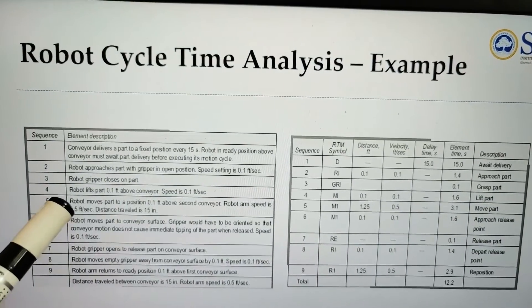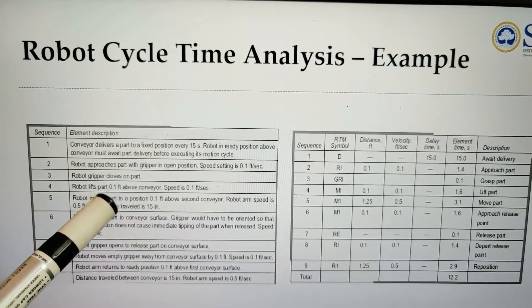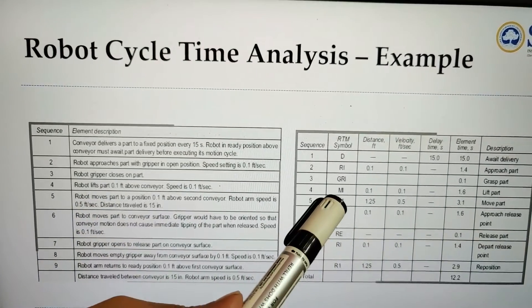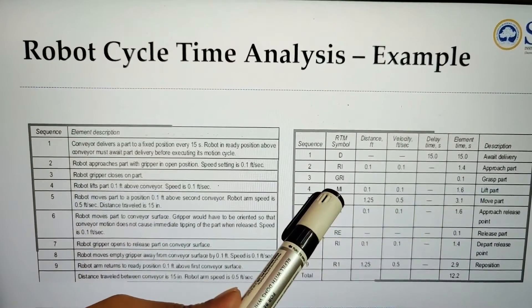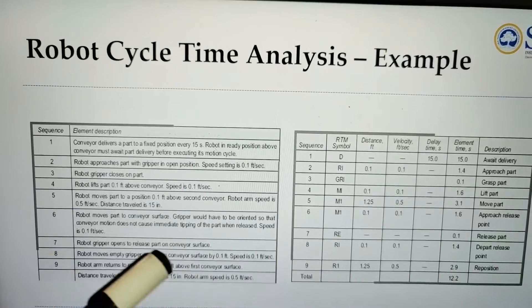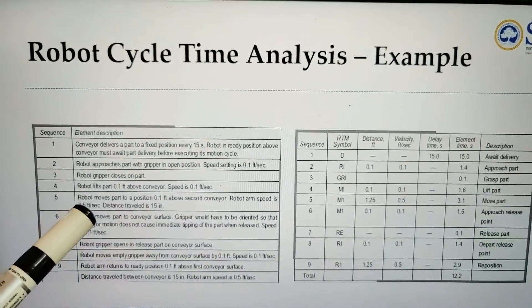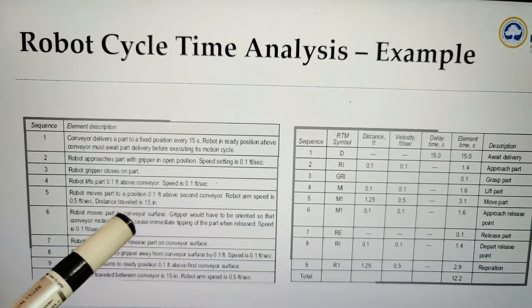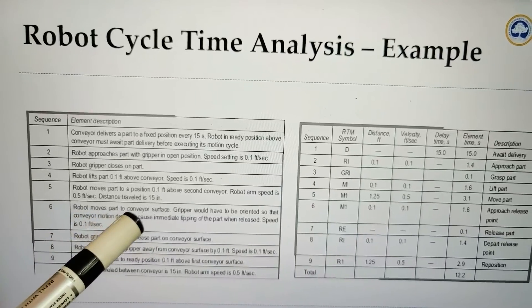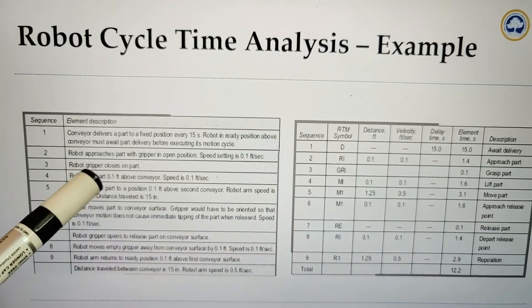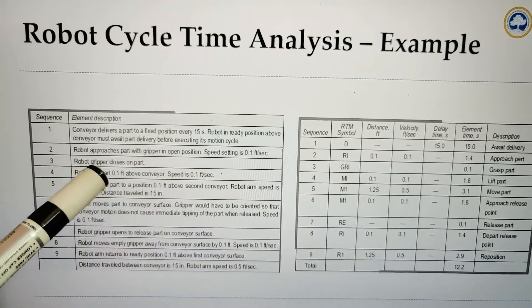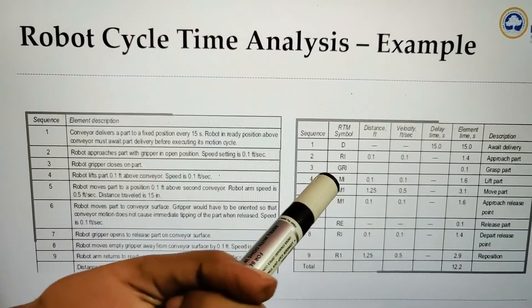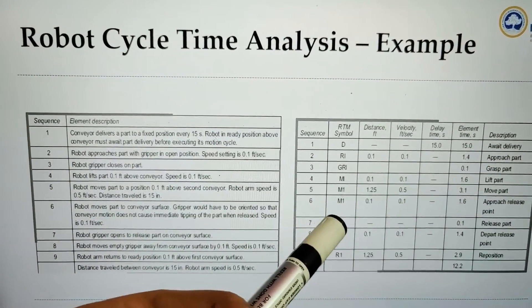Then the robot lifts the part, using symbol M. The robot then moves the part to position and moves the part to the conveyor — all of these come under moving the object, so the symbol M is used for all of these steps.